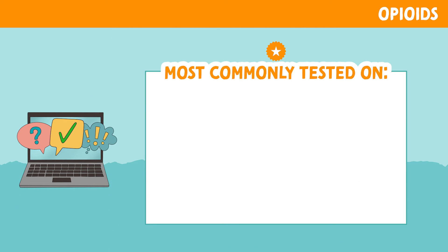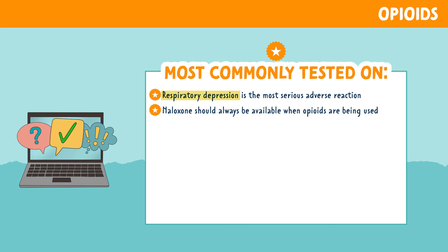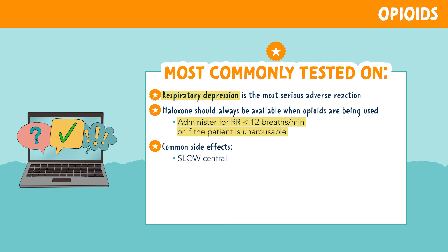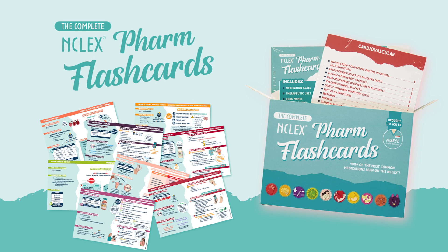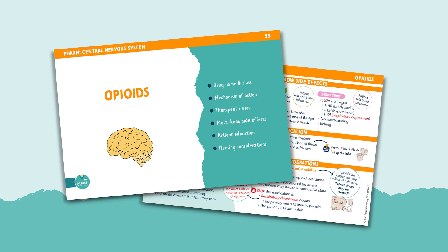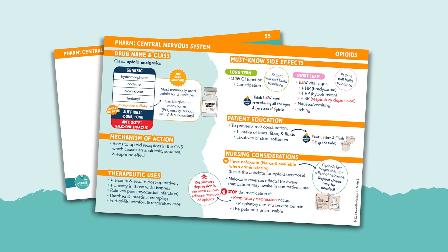Here are the most commonly tested points on opioids: Respiratory depression is the most serious adverse reaction. Naloxone should always be available when opioids are being used — administer it for a respiratory rate less than 12 breaths per minute or if the patient is unarousable. Common side effects include slowed central nervous system, low or decreased vital signs, and slow GI function or constipation. Due to increased drowsiness, assistance should be provided with ambulation for patient safety. For more information, check out the complete pharmacology flashcards, which cover everything in a fun and condensed way.